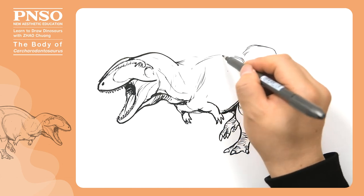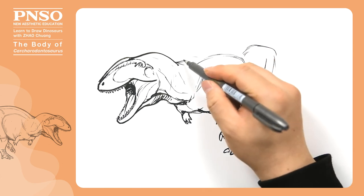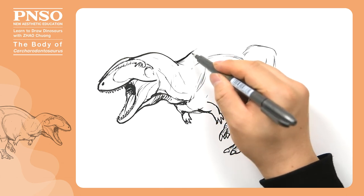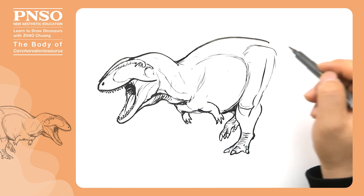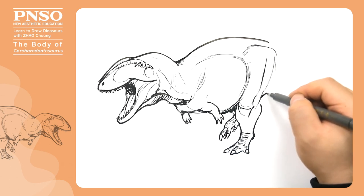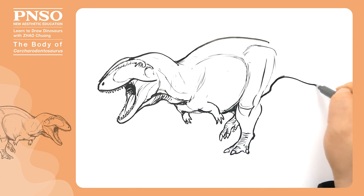After that, let's outline the upper part of the ribs, the neural spines, and the ischium, and then draw its tail backward.